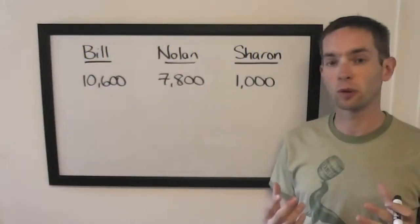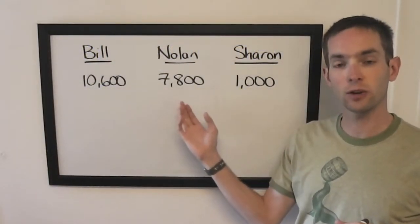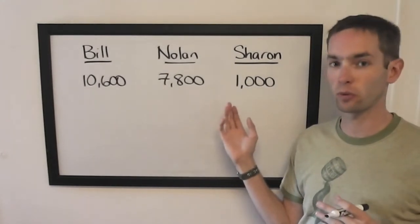Here's an example from a game from October. We've got Bill in the lead with 10,600, Nolan in second with 7,800, and Sharon a distant third with 1,000.